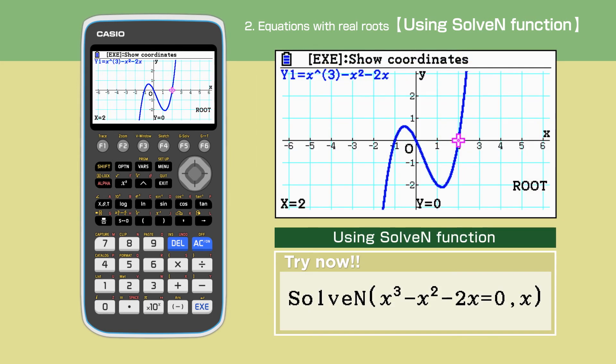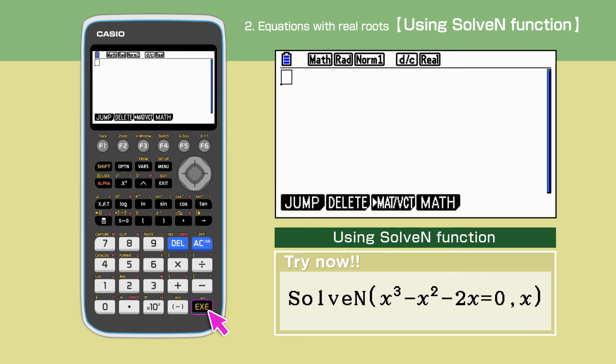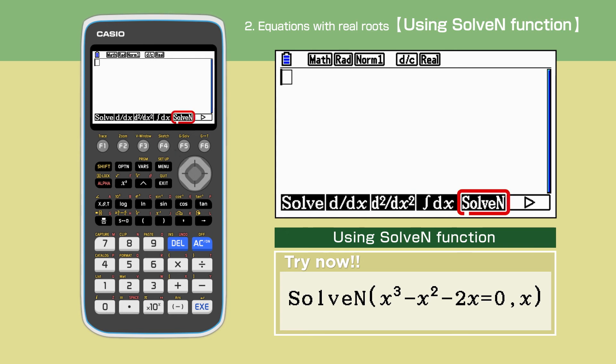Let's use the SolveN function. Go back to the main menu and open matrix function and press execute. Press option, press F4 and display the calc menu. Press F5 to select SolveN.